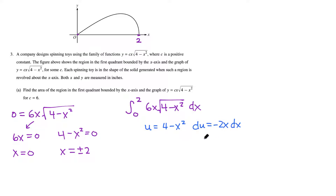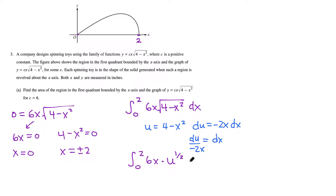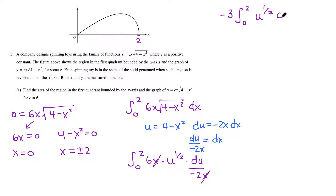Therefore du = −2x dx, and solving for dx gives dx = du / (−2x). Substituting into the integral: we have 6x times u to the 1/2 power times du over (−2x). The x terms cancel out, leaving only u's. Simplifying, the 6 and −2 combine to give a coefficient of −3, yielding −3 times u to the 1/2 du.